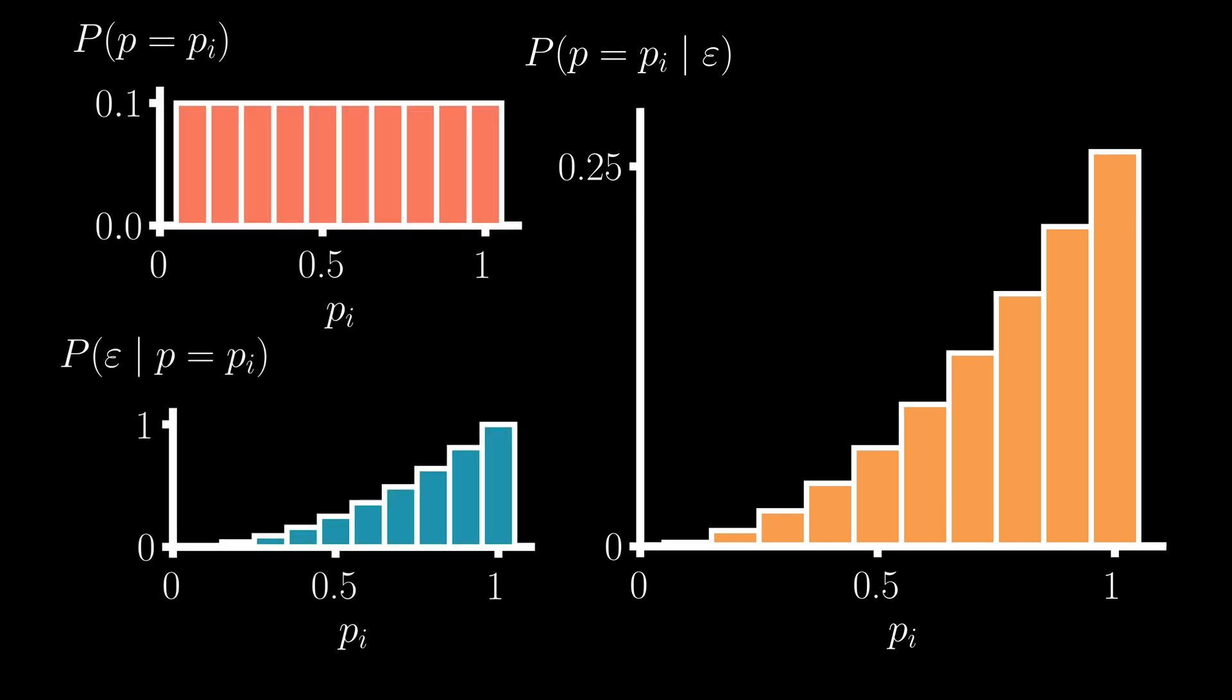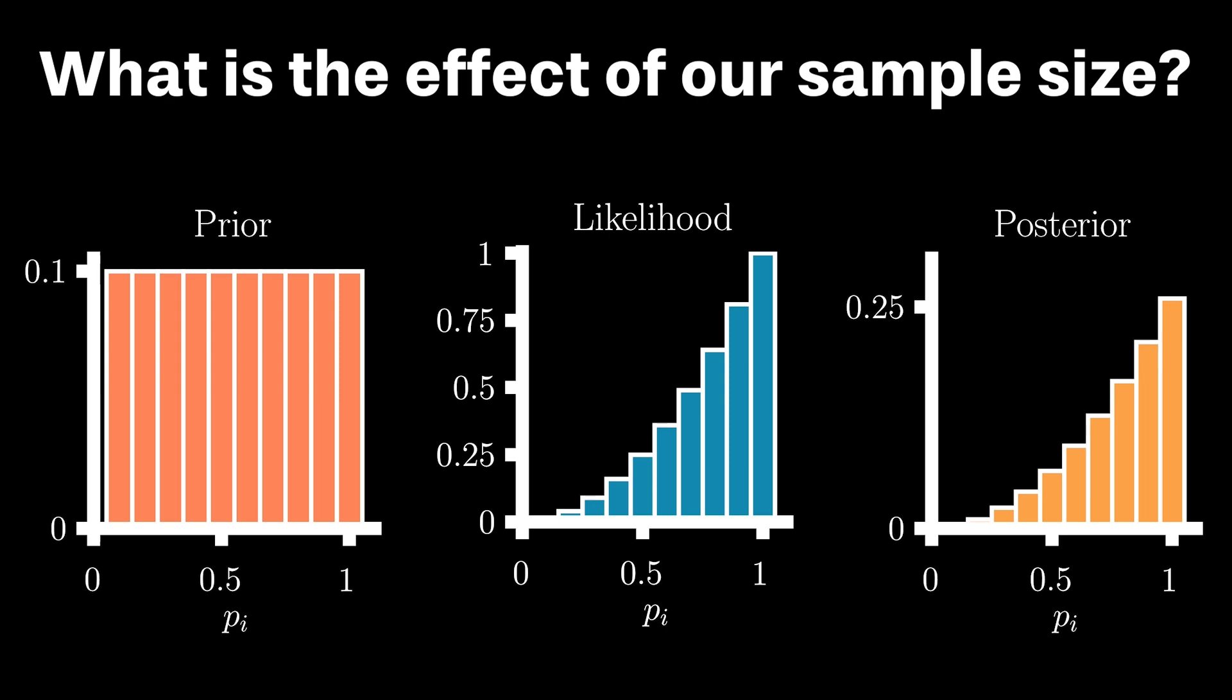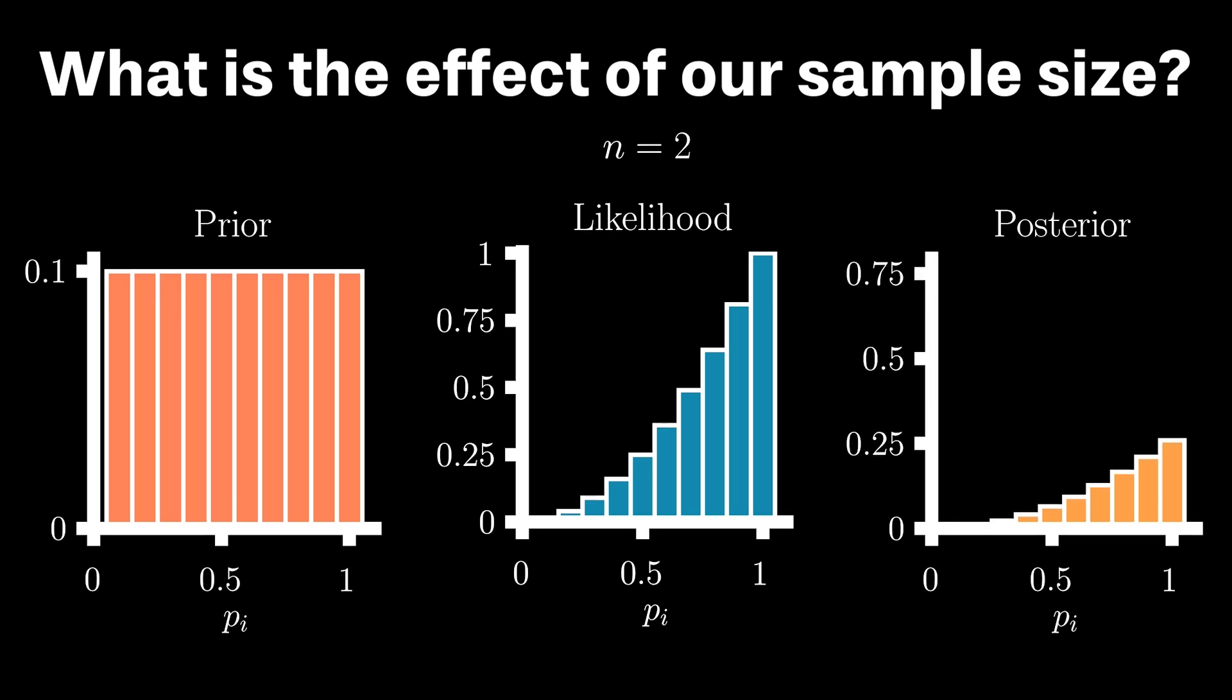Now, before we solve our original problem, let's understand the effect of both our sample size and prior distribution on our resulting posterior distribution. Remember, our likelihood function and posterior distribution are based on observing two consecutive sunny days. Let's now increase the number of consecutive days, n, that we have observed the sunrise.